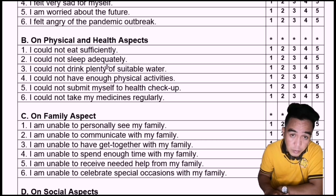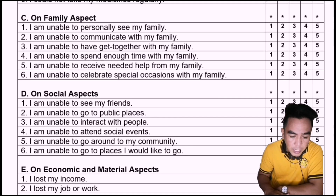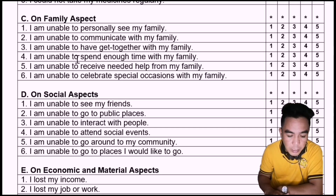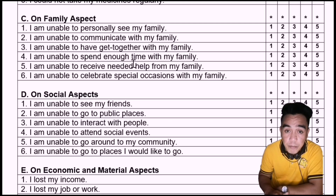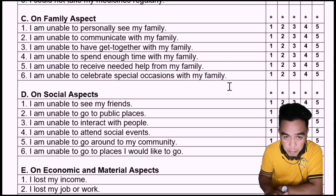Make sure that the items belong accordingly to each aspect or group. Under the family aspect: I am unable to personally see my family; I am unable to communicate with my family; I am unable to have a get-together with my family; I am unable to spend enough time with my family; I am unable to receive needed help from my family; I am unable to celebrate special occasions with my family.